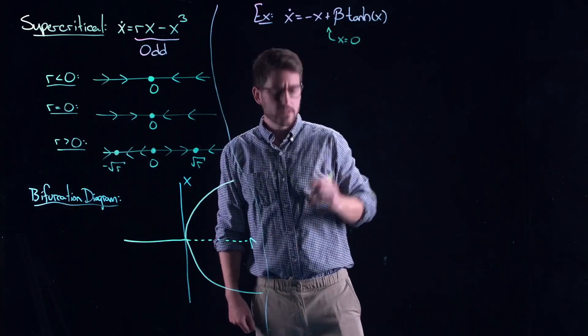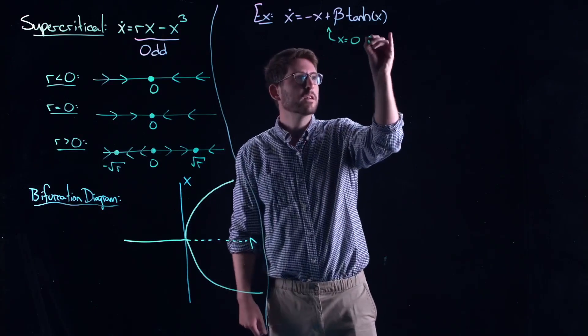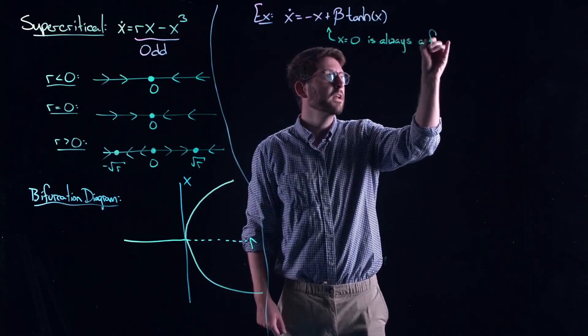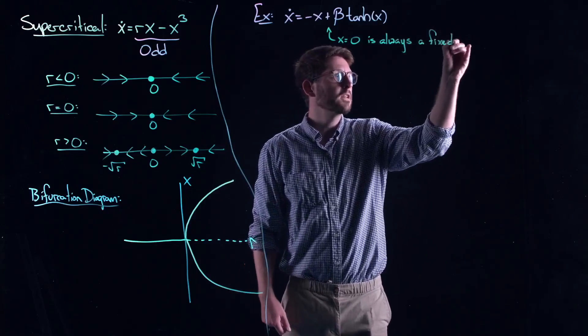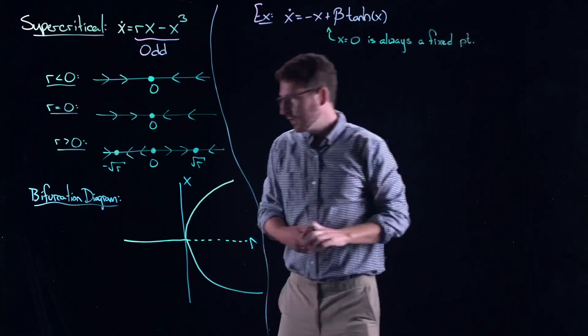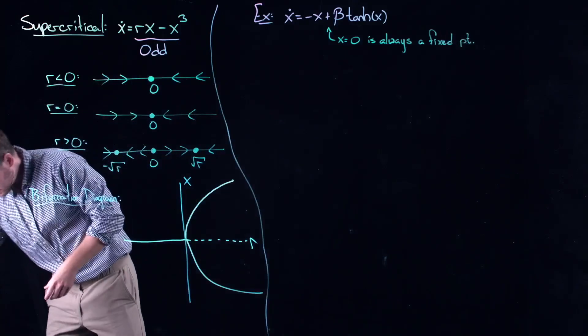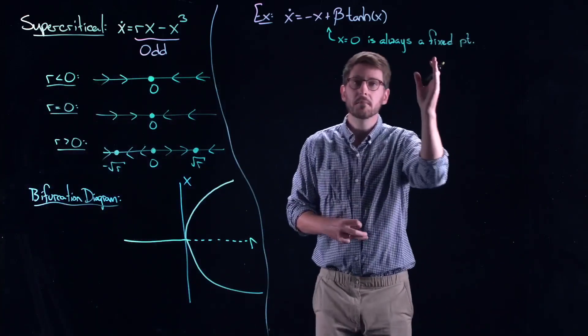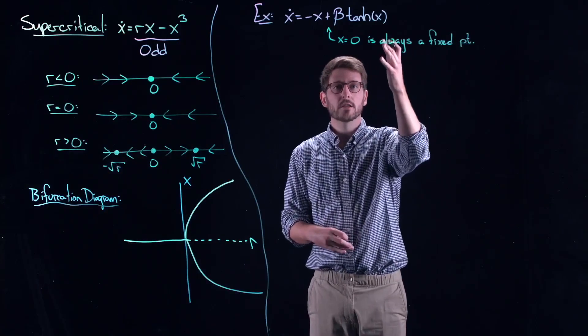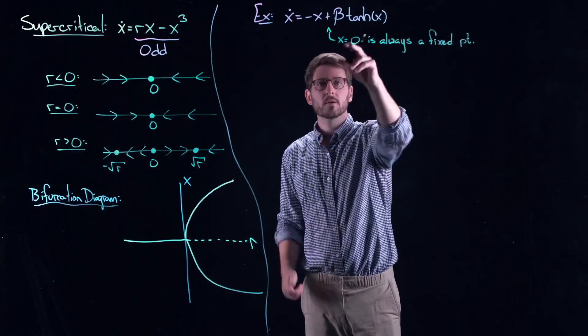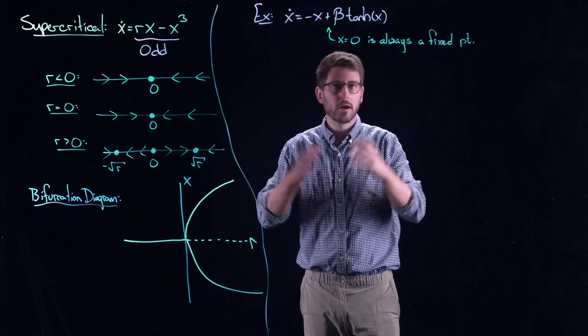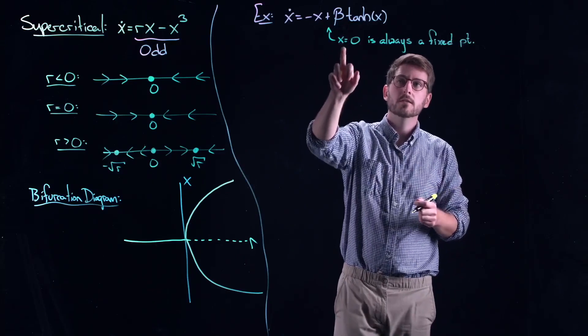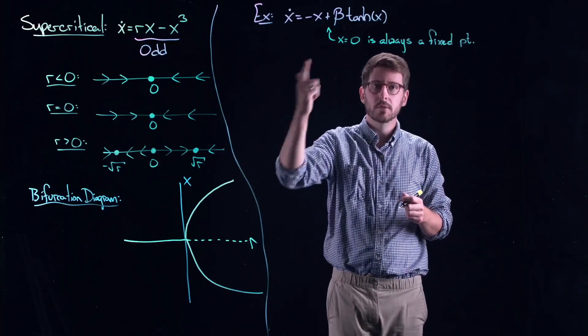The state of that neuron is given by x. We have a bifurcation parameter in here, beta. That would be a sort of response that the neuron can determine on its own. Now, first thing I want you to know, x equal to zero is always a fixed point. So, if you were doing this completely fresh, and you didn't know that this lecture was about pitchfork bifurcations.